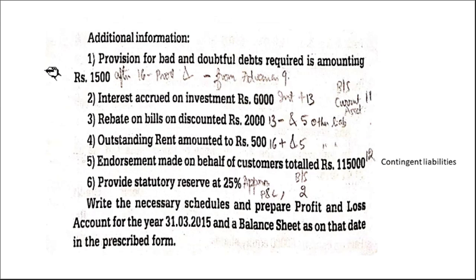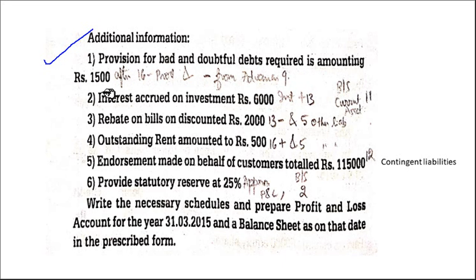So they have given the adjustments. In the adjustment, whatever appears — it appears twice. In the trial balance, whatever appears — it appears only once. Here, provision for bad and doubtful debts required is amounting to rupees 1,500. Where does it appear? Provision for bad debts goes under Schedule 16.